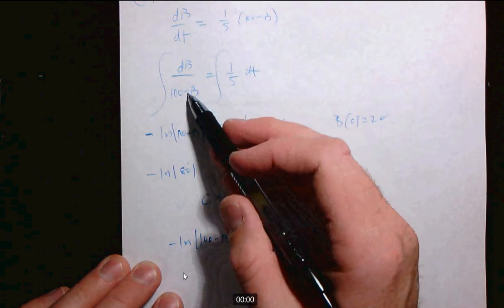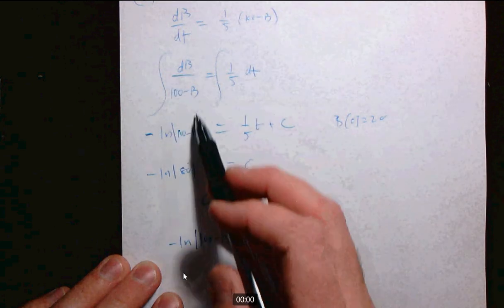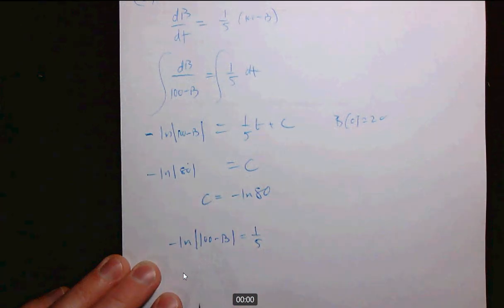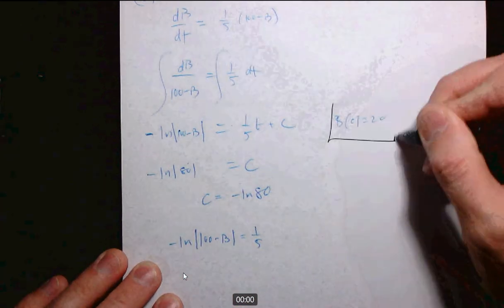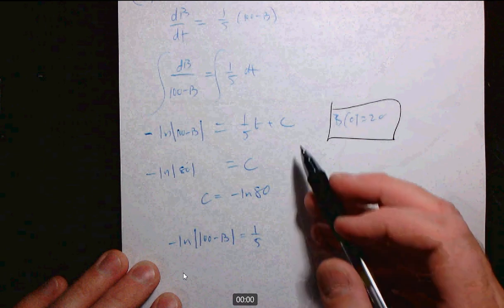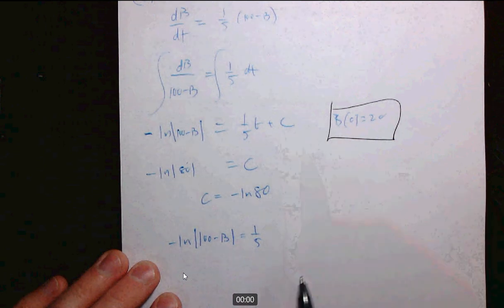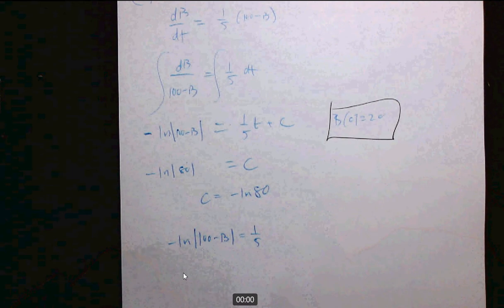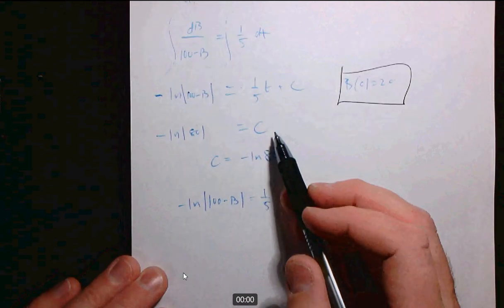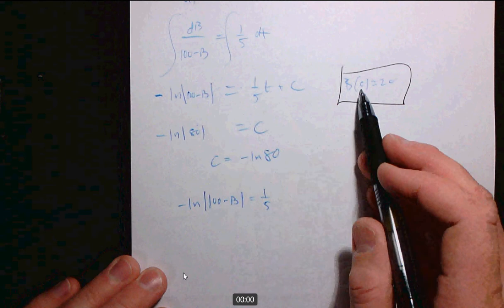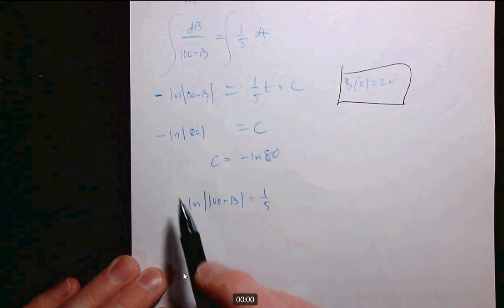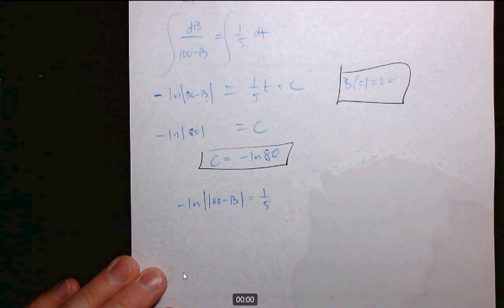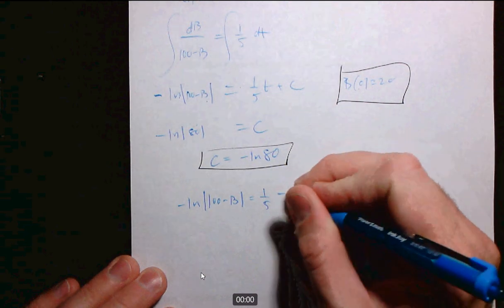Watch out for the reverse chain rule here. When you integrate this, this is ln of 100 minus B. But since it's negative B, you should have a negative out in front there. The one thing I want to talk about is this initial condition. You use the initial condition to find C. A lot of you solved explicitly for B and then use the initial condition to find C. That's totally fine. Often it's easier just to do it immediately after integration. If T is 0 and B is 20, then you get this equation right away. You know that C is ln of negative 80. So this is 1/5 minus ln of 80.